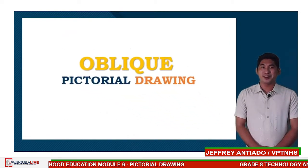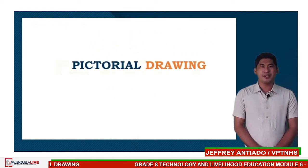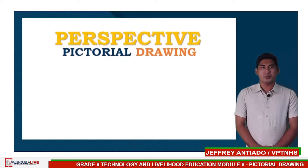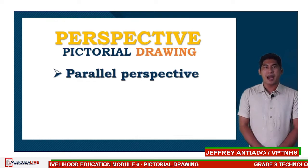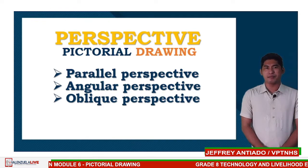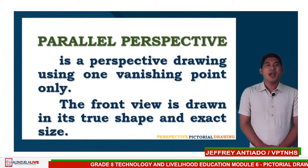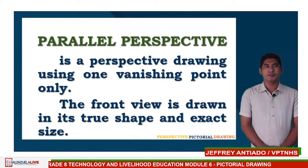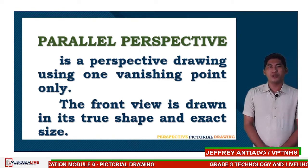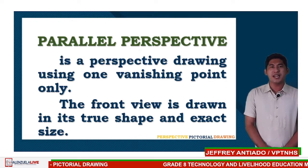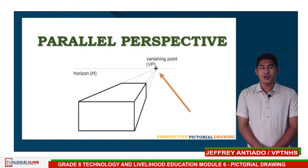We are done with oblique pictorial drawing. Now let's proceed with the third type of pictorial drawing, which is perspective pictorial drawing. In perspective pictorial drawing, the key concept is the vanishing point. There are three types: parallel, angular perspective, and oblique perspective. Parallel perspective, or one-point perspective, is a perspective drawing using one vanishing point. The front view is drawn in its true shape at full size or scale. A vanishing point is a point at which receding parallel lines seem to meet when represented in linear perspective.